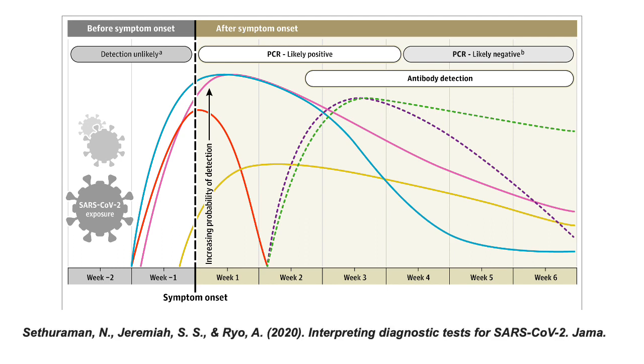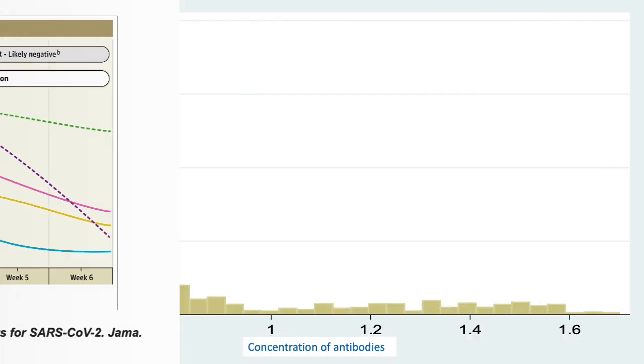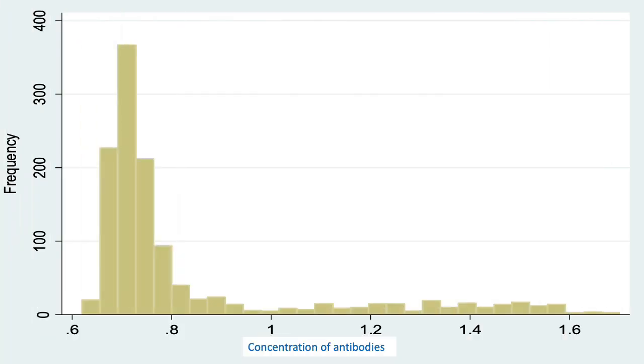But why would a test give false results? Tests measure a biomarker, for example, antibodies, and if the measurement exceeds a pre-specified threshold, what we call the cut-off, the result is declared positive, and if it doesn't, negative.